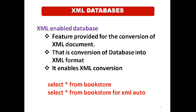The first type is XML enabled database. The feature provided is the conversion of XML documents — that is, the conversion of the database will be in the form of XML file format. There are two statements: SELECT * FROM bookstore, and SELECT * FROM bookstore FOR XML AUTO. The first statement displays data in the form of a table, and the second SQL statement displays data in the form of XML file format. The second representation represents XML enabled databases.